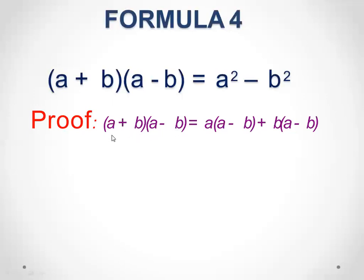To multiply the two brackets, a is written outside with the second bracket, then plus b with the second bracket. Opening the brackets: a multiplied by a is a square, minus ab, then plus ab, minus b square.